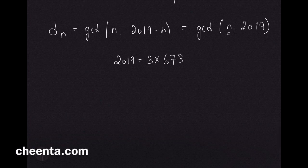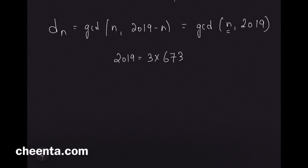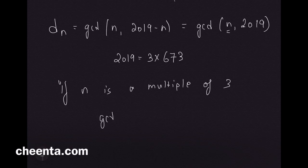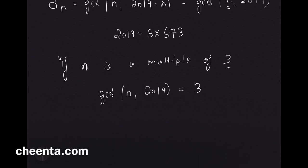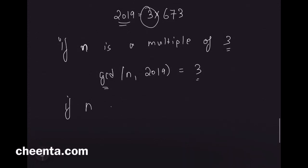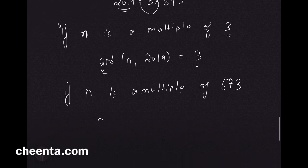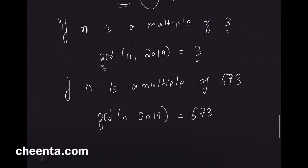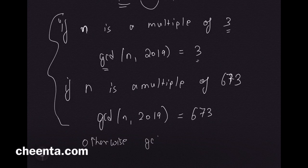Now we can do the case analysis. If n is a multiple of 3, then GCD(n, 2019) is exactly 3 — because n may contain many factors of 3 but 2019 contains only one. If n is a multiple of 673, then GCD(n, 2019) = 673. Otherwise, the GCD is 1.